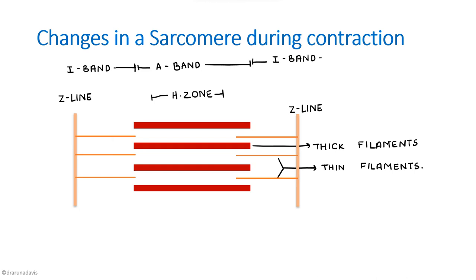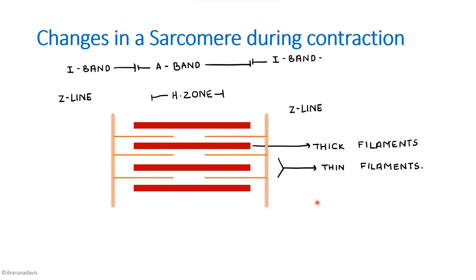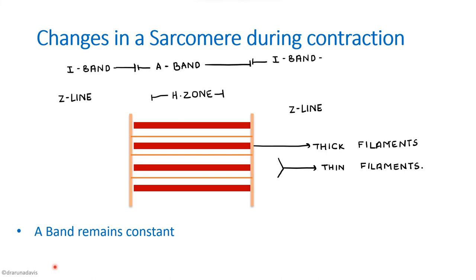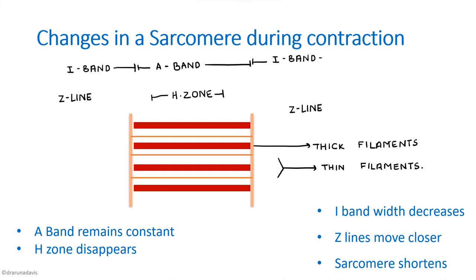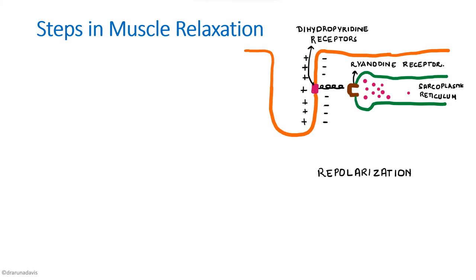We should also know the changes in a sarcomere during contraction. During the sliding movement, the thin filament slides over the thick filaments. The A band remains constant — there is no change. However, the H zone disappears and the M line is no longer visible. The I band width decreases, and the Z lines move closer together. Finally, the sarcomere shortens. These are the changes that occur in a sarcomere during muscle contraction.